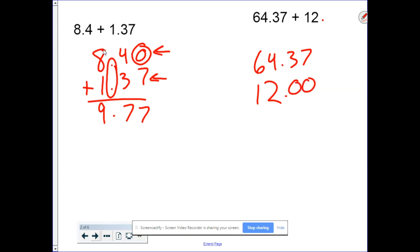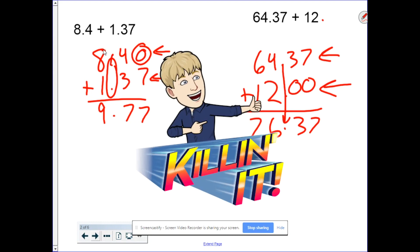Now I have two decimal place values in the top number and two place values in the bottom number. I add them up. 7 plus 0 is 7. 3 plus 0 is 3. 4 plus 2 is 6. 6 plus 1 is 7. Notice how I bring my decimal points straight down.